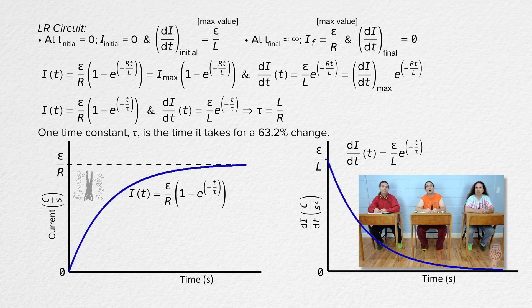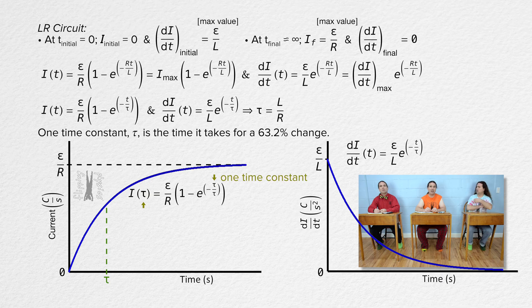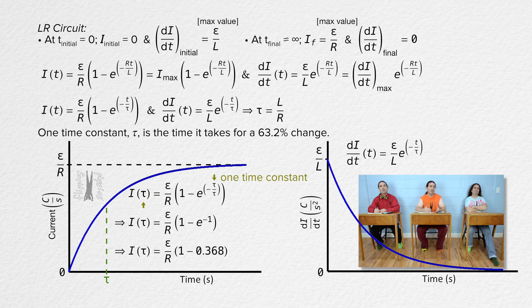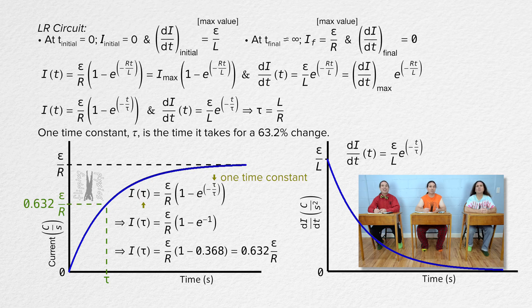After one time constant of time has gone by, the current in this LR circuit equals EMF over resistance times the quantity 1 minus e to the power negative 1, and e to the power negative 1 equals 0.368, and 1 minus 0.368 equals 0.632. That means the current after one time constant of time has gone by equals 0.632 times EMF over resistance, or 63.2% of the final maximum current in the circuit.